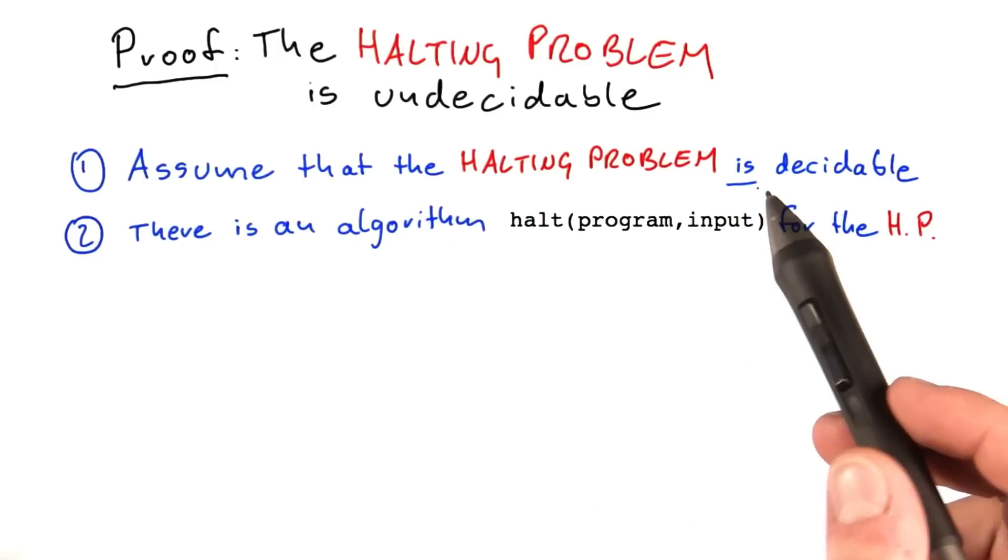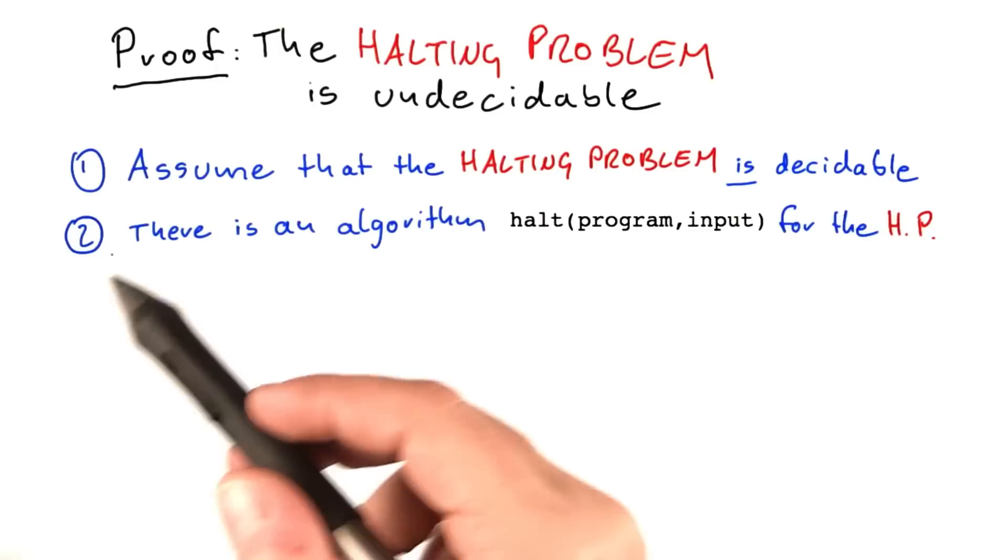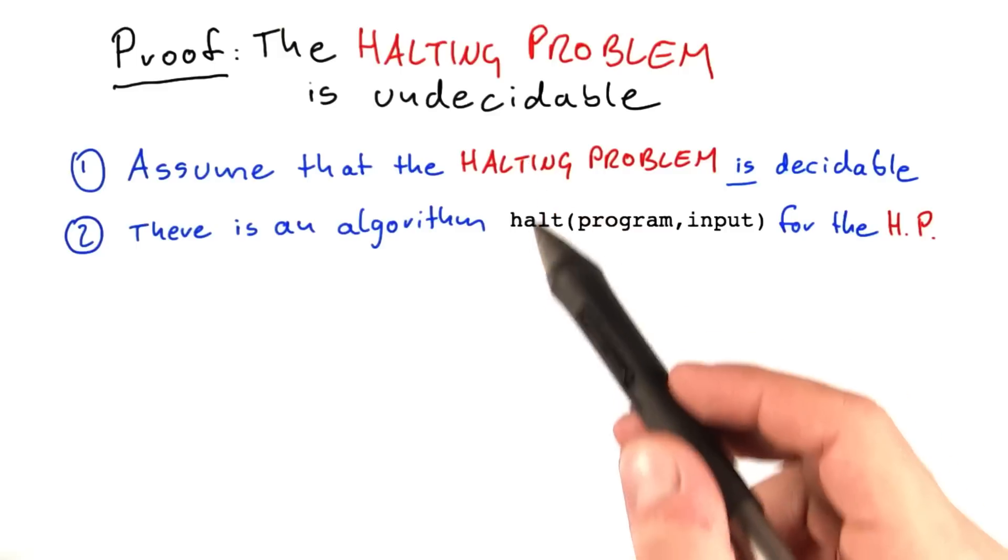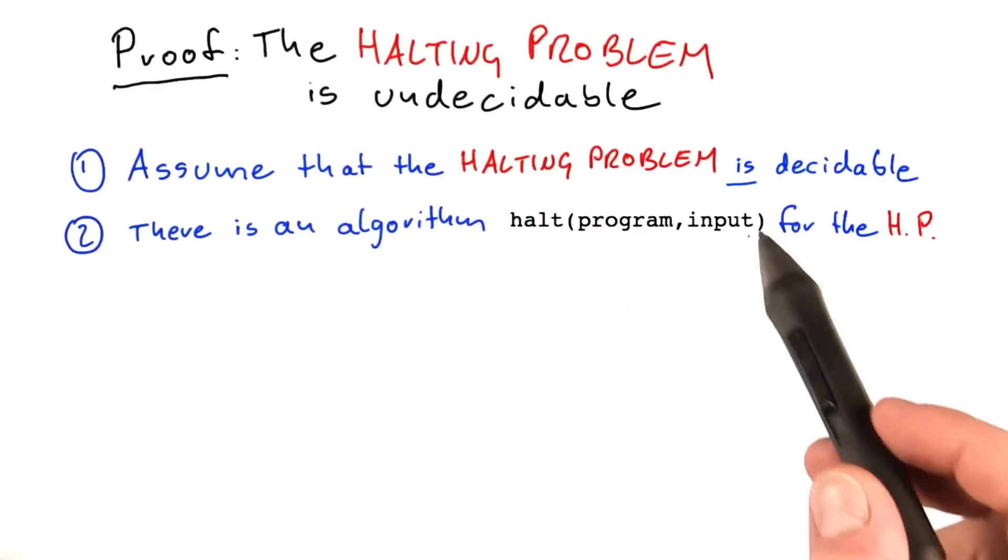But since the halting problem is decidable, or since we assume that the halting problem is decidable, we can directly conclude from this assumption that there must be some algorithm solving it, no matter what the program, no matter what the input.